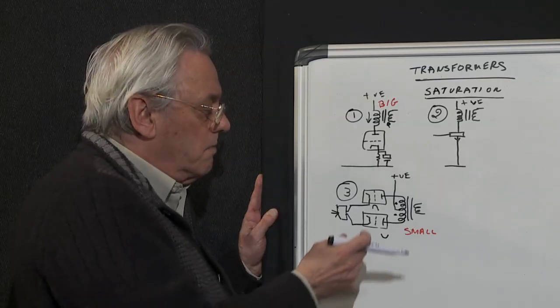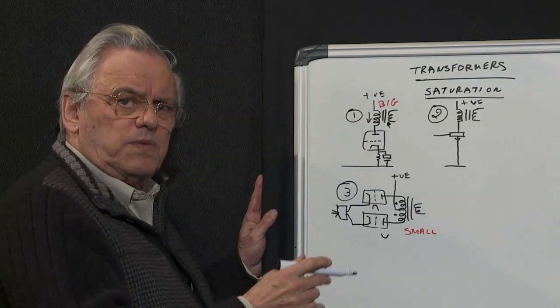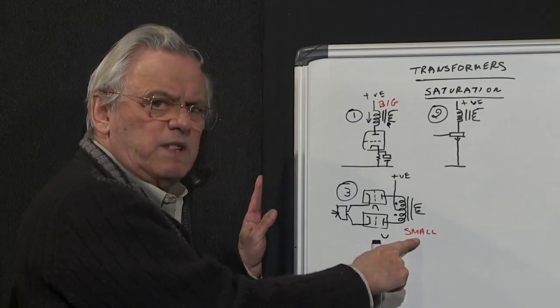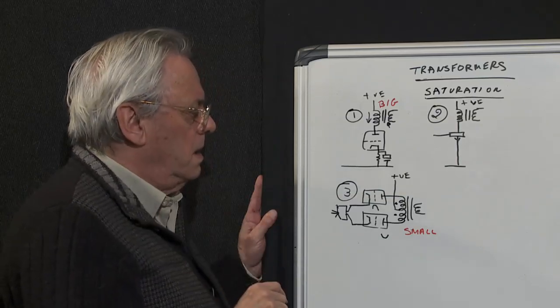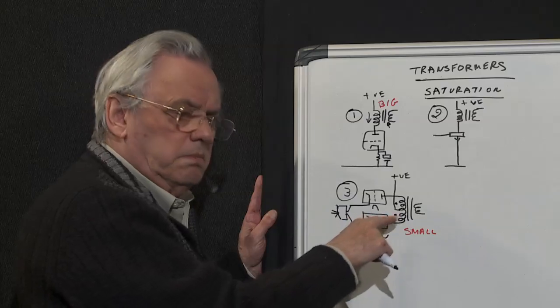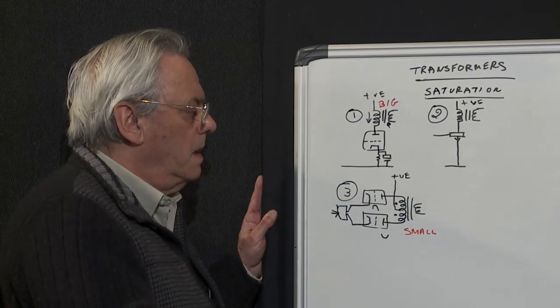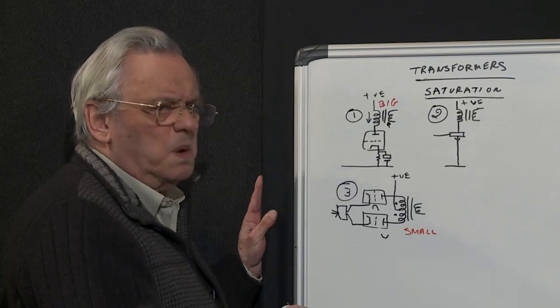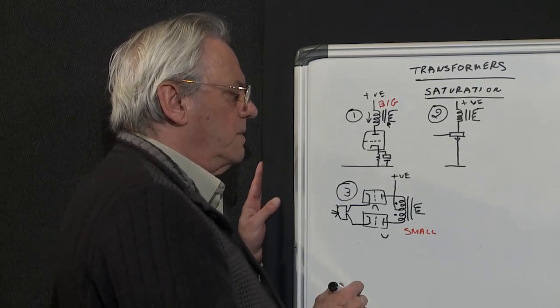So ideally they'll balance themselves out, and so you get very little residual DC going to the primary of the transformer, which is fantastic because you can now have a very small transformer—that big—and probably no need for an air gap. Is this too good to be true? Well yes, it is actually, because there's a nasty thing called crossover distortion.